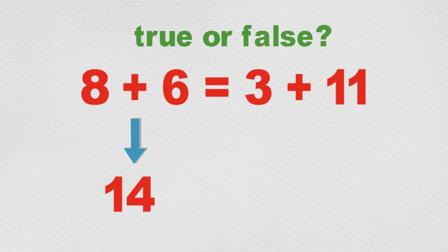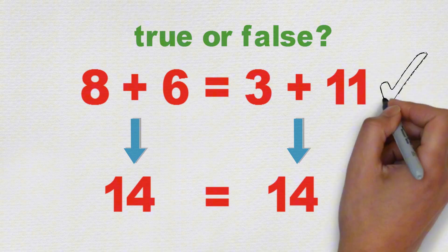3 plus 11 also adds up to 14. Since both pairs of numbers add up to the same thing, then they must be equal. So 8 plus 6 equals 3 plus 11 is true.